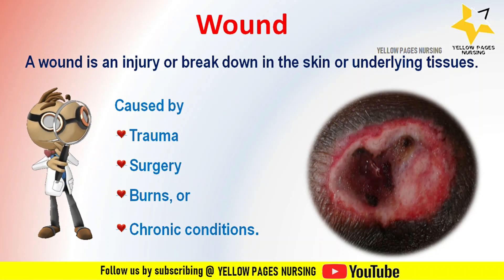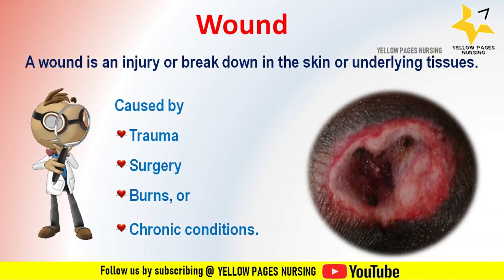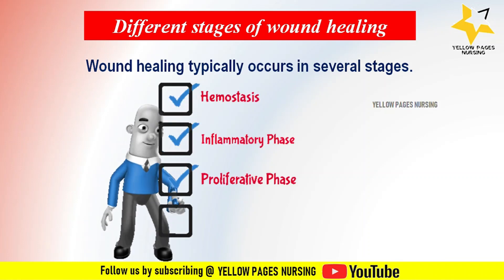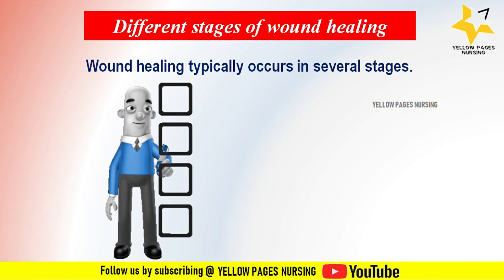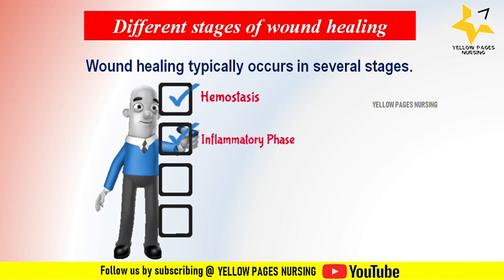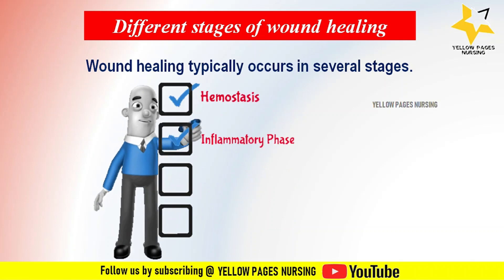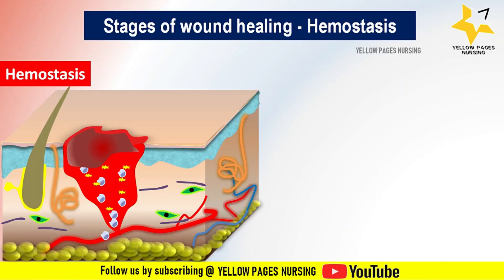Now let's discuss the different stages of wound healing. Wound healing typically occurs in several stages: hemostasis, the inflammatory phase, the proliferative phase, and the remodeling phase. Wound healing stages can vary in duration depending on the type and severity of the wound.